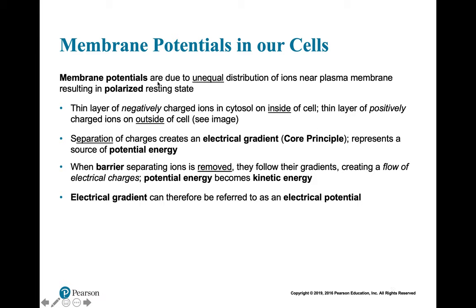What is a membrane potential? A membrane potential is due to the unequal distribution of ions just near the plasma membrane. If we think about the word polarized or polarity, it means something is different at one side versus the other. When we're talking about a membrane potential, we're talking about a different distribution of ions along the outside versus the inside of the plasma membrane — different ion gradients, an unequal distribution of ions near the plasma membrane.